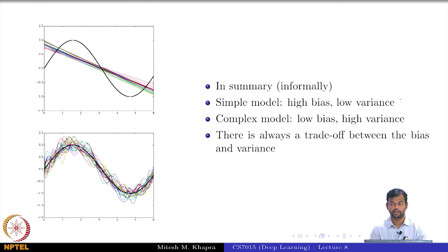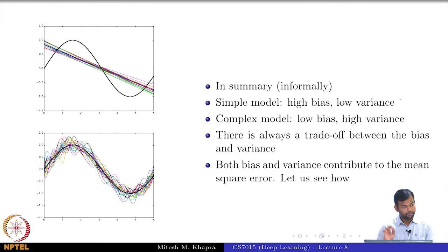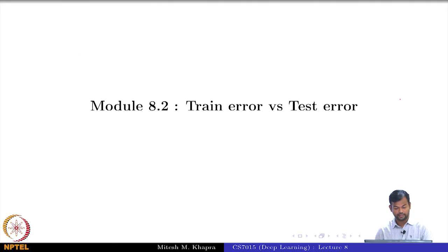Informally I can say the following: simple model has a high bias, low variance. Complex model has a low bias, high variance. And there is always going to be a tradeoff between the bias and variance. So why is there always a tradeoff? It turns out that both bias and variance contribute to the mean square error.